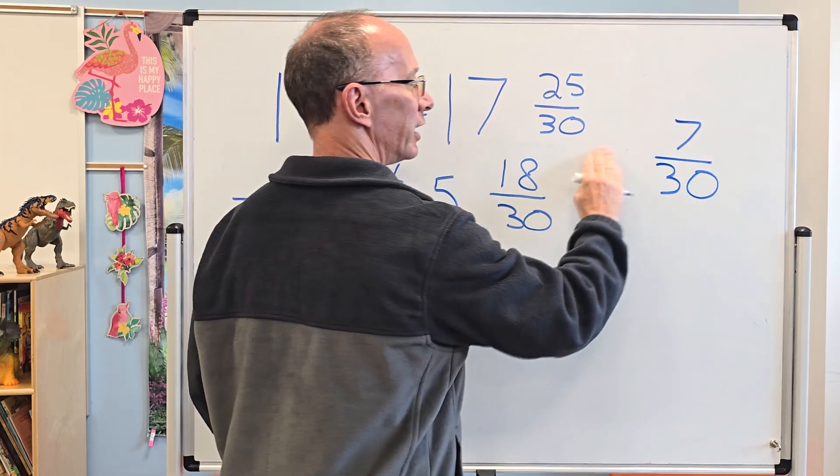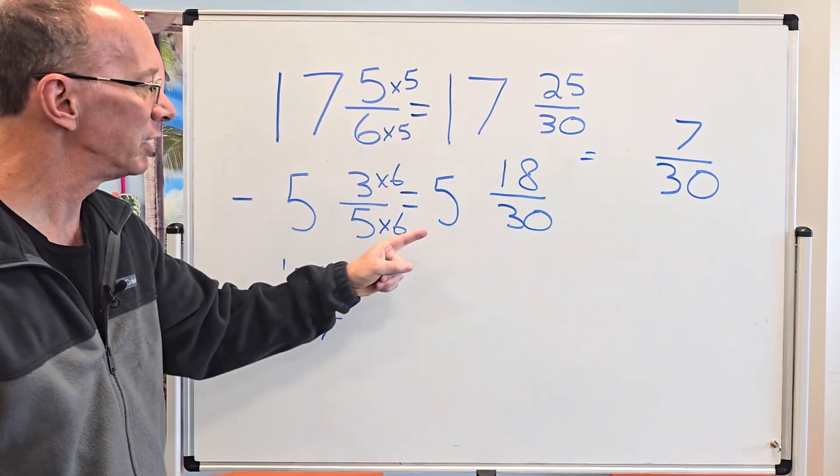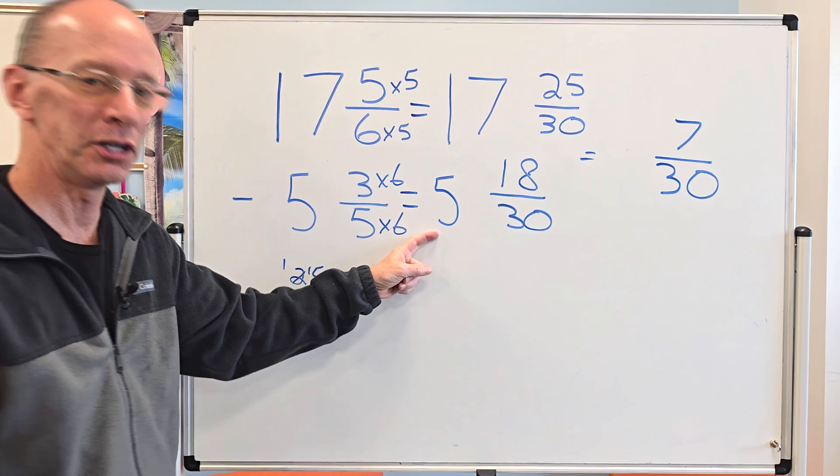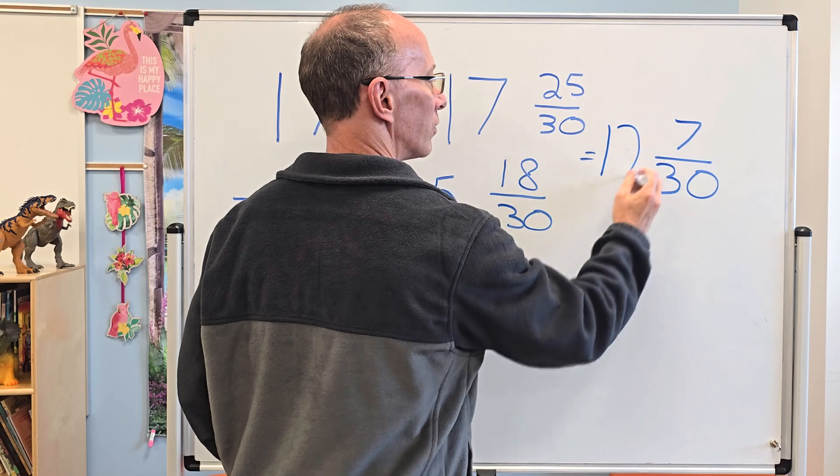I'm going to move that equal sign over a little bit. Now I'm going to subtract 17 minus 5. 17 minus 5, what is it? You bet, it is 12. I put 12 right here.